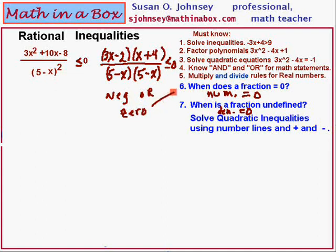Now we want this to be less than zero, so we are trying to make this big expression negative, or trying to make it equal zero. How does a fraction equal zero? We discussed that in number six: we will make the numerator equal zero to accomplish that part of the problem. But we also need to know when this big expression is negative, and that's where I'm going to use number lines. Each factor gets its own number line.